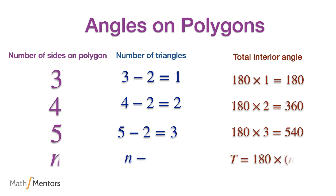Following this pattern, if a polygon has n sides, there will be exactly n minus 2 triangles. Since interior angles on each triangle add up to 180 degrees, the total interior angle T on an n-sided polygon is given by the formula: T = 180 × (n − 2).